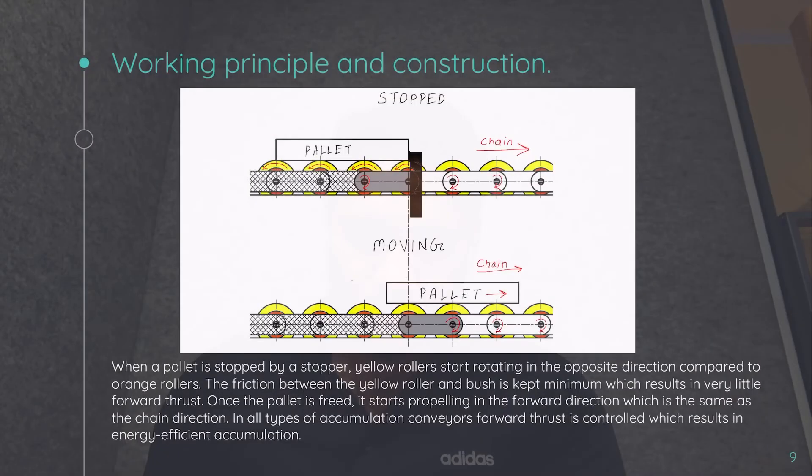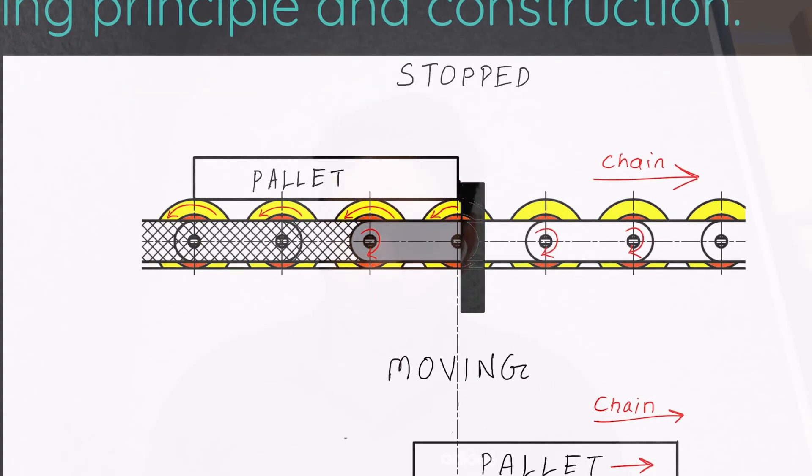Let's move forward. What is the working principle of an accumulation conveyor? Let's see: the stopper is engaged and the chain is still moving forward. So what happens is, since the stopper is engaged and the pallet is stopped, these rollers, when they come under the contact of the pallet, they will start rotating in the opposite direction. Why will they rotate? Because they are free to rotate on their axis. Remember that we explained how the yellow roller is free to rotate in both directions.